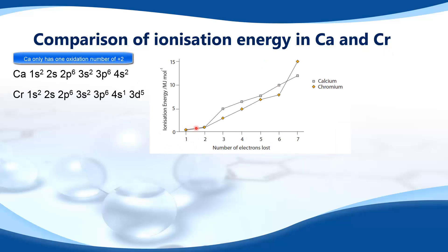If we look at calcium first, you see a big increase between the second and third ionization energy. Looking at the electron configuration for calcium, the 4s electrons are lost first, and then this big jump in ionization energy corresponds to the electron being removed from the 3p sublevel. The 3p sublevel is at a lower energy than the 4s and is also closer to the nucleus, so there's a stronger electrostatic attraction holding the electrons, so more energy is required to remove the third electron.